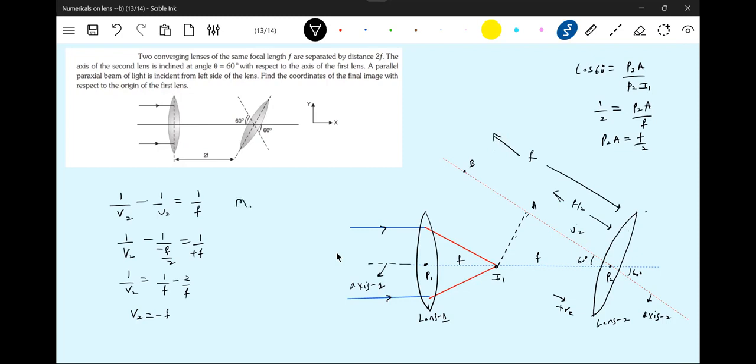Then we will go for magnification. M2 is equal to V2 by U2. V2 is what? Minus F. Minus F equal to 2. Magnification is 2. H1 is 2. H1 is I1A.